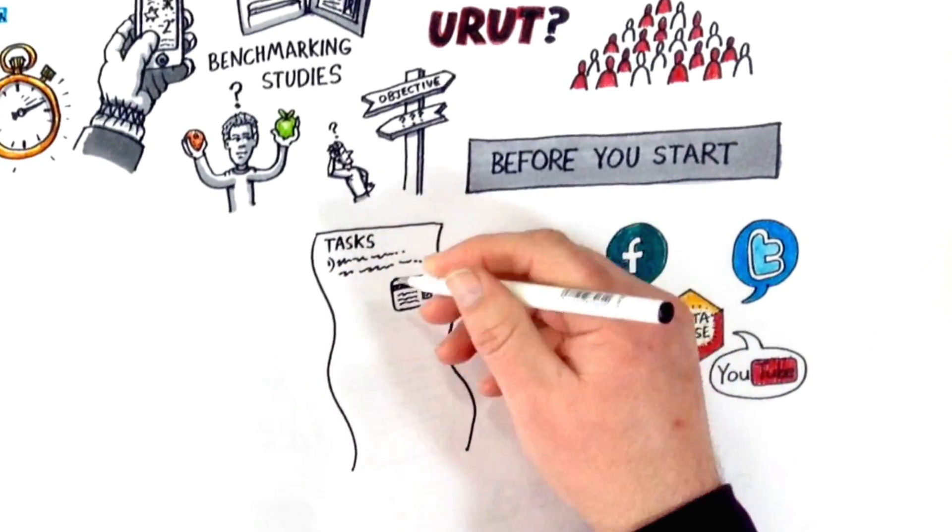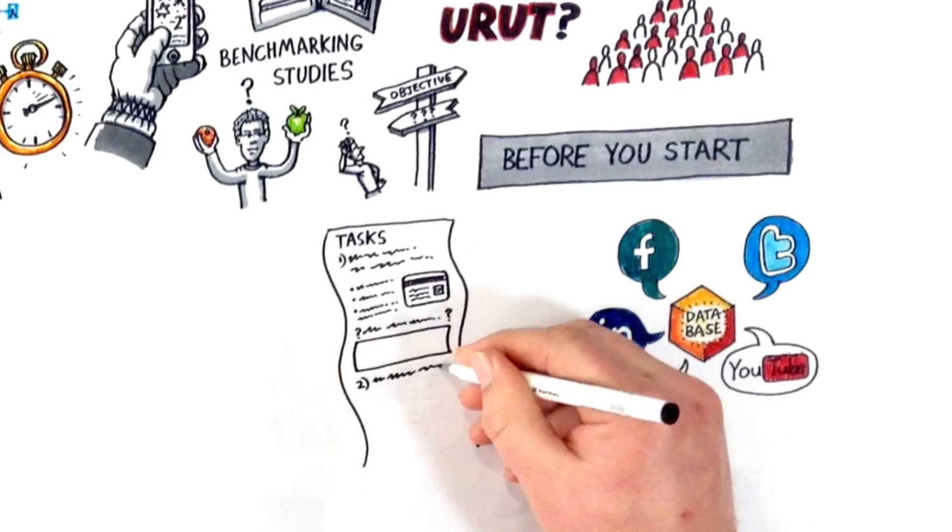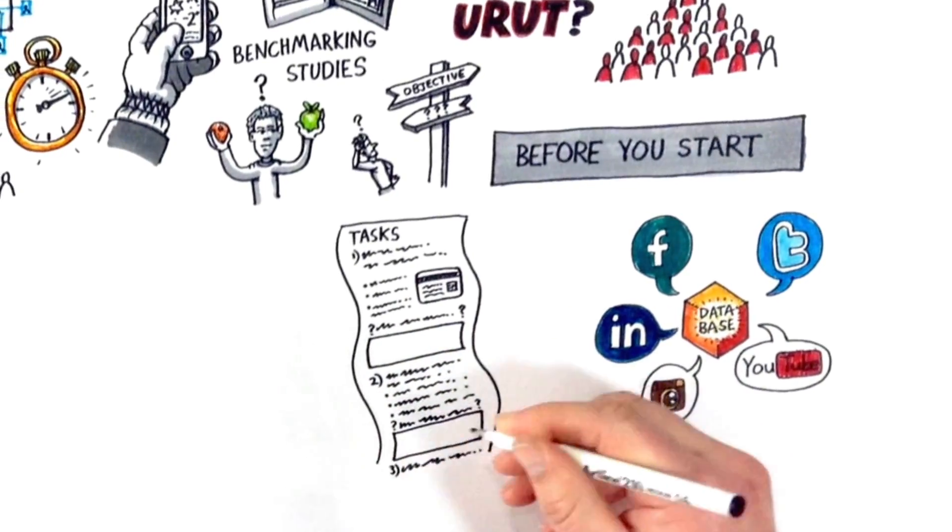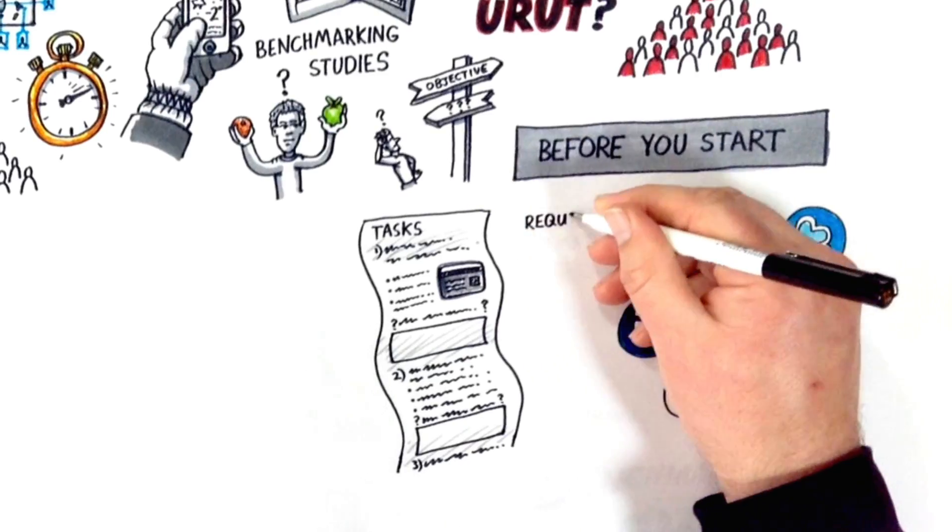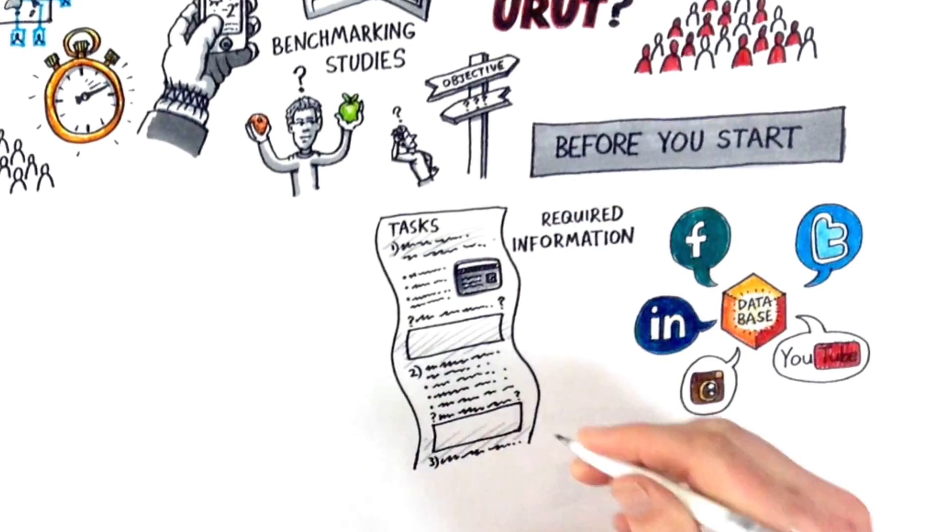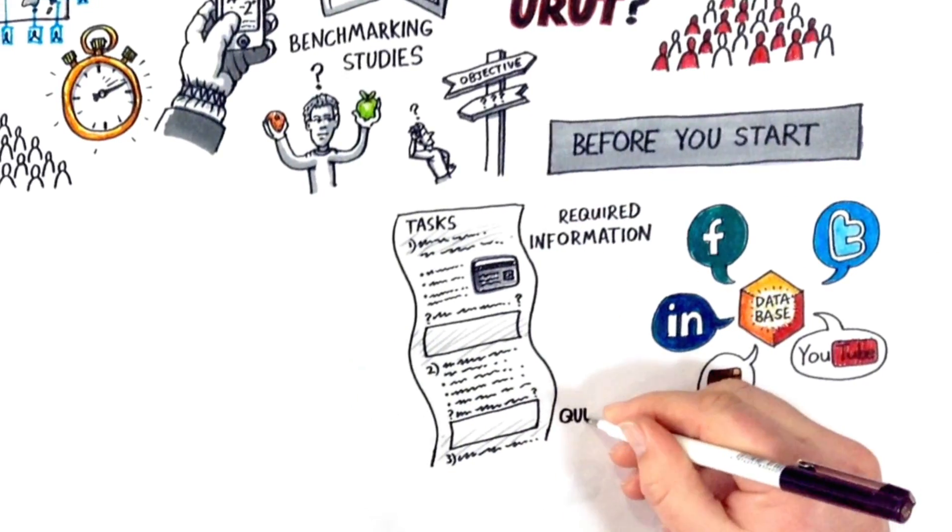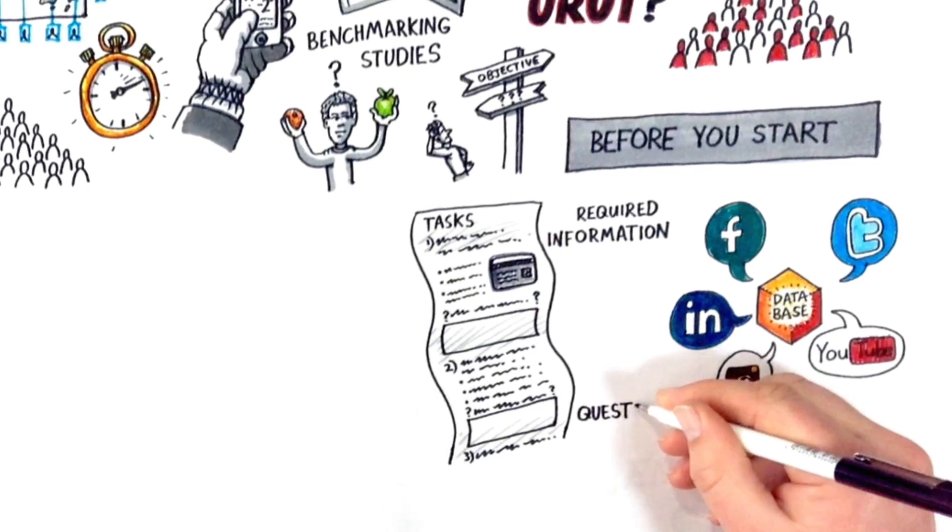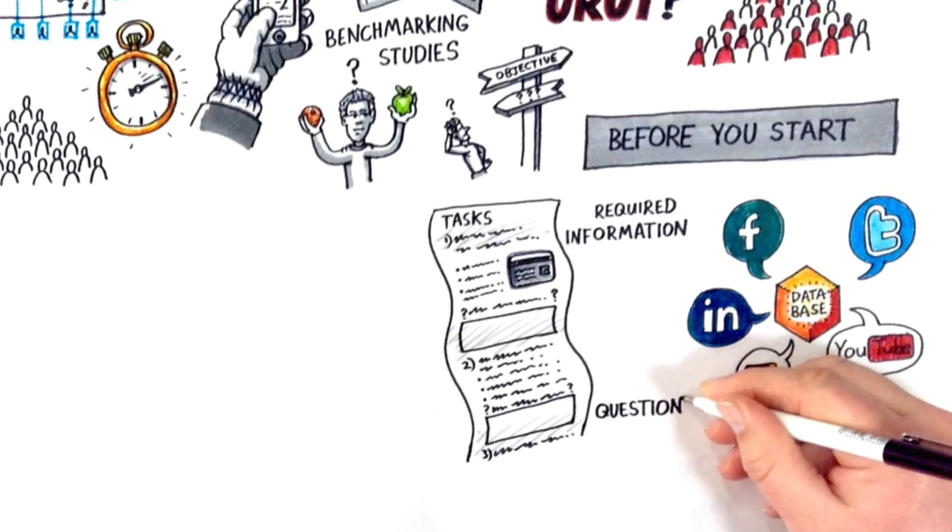Tasks developed for URUT need to be clear and provide enough detail for participants to complete the task on their own. Try to include any information they would require to complete the task. For example, if a task requires credit card details, providing fictitious card details will be necessary.